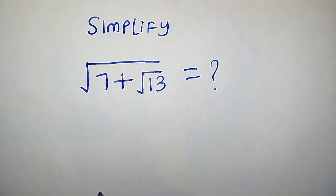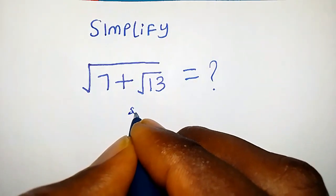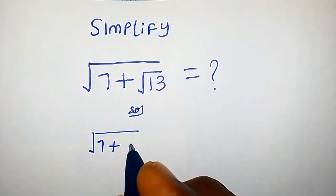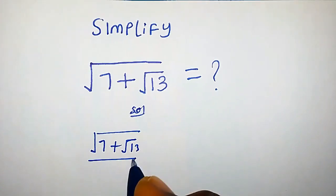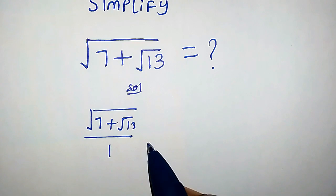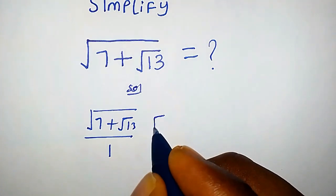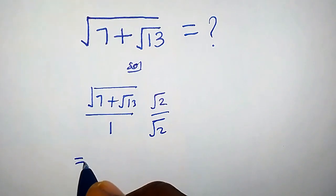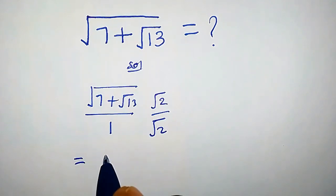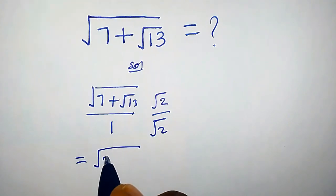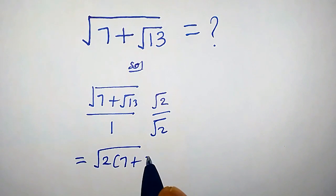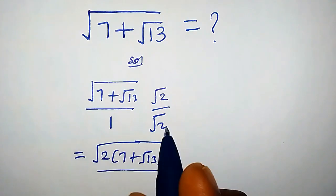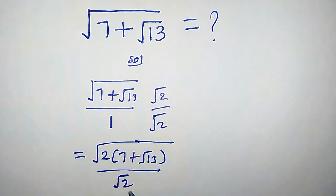How do we simplify this radical problem? This expression can be written as (√7 + √13) over 1. Suppose we multiply both numerator and denominator by √2, so we're going to have √2 times (√7 + √13) all over 1 times √2.